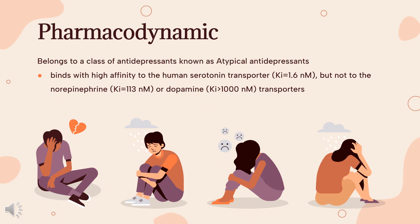Pharmacodynamics: Vortioxetine binds with high affinity to the human serotonin transporter (Ki 1.6 nM), but not to the norepinephrine (Ki 113 nM) or dopamine (Ki 1000 nM) transporters. Vortioxetine potently and selectively inhibits reuptake of serotonin by inhibition of the serotonin transporter (IC50 = 5.4 nM). Specifically, vortioxetine binds to 5-HT3 (Ki 3.7 nM), 5-HT1A (Ki 15 nM), 5-HT7 (Ki 19 nM), 5-HT1D (Ki 54 nM), and 5-HT1B (Ki 33 nM) receptors, and is a 5-HT3, 5-HT1D, and 5-HT7 receptor antagonist; 5-HT1B receptor partial agonist; and 5-HT1A receptor agonist.